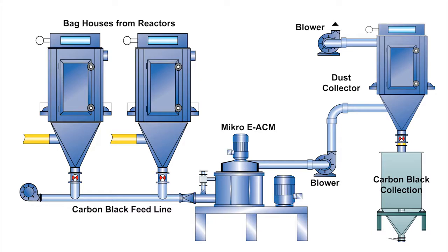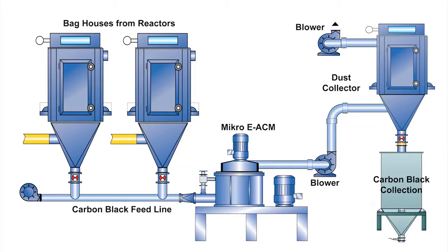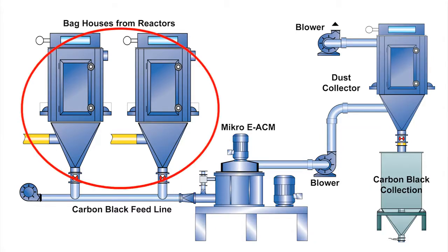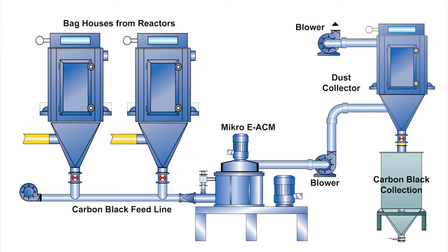The eACM can be installed inline into existing processes as well as offline processes. For retrofit into existing processes, the mill, in addition to a material handling fan, can be installed between the filters from the reactor and the primary bag filter. The reason for the additional material handling fan is to account for the increased pressure drop from the eACM.